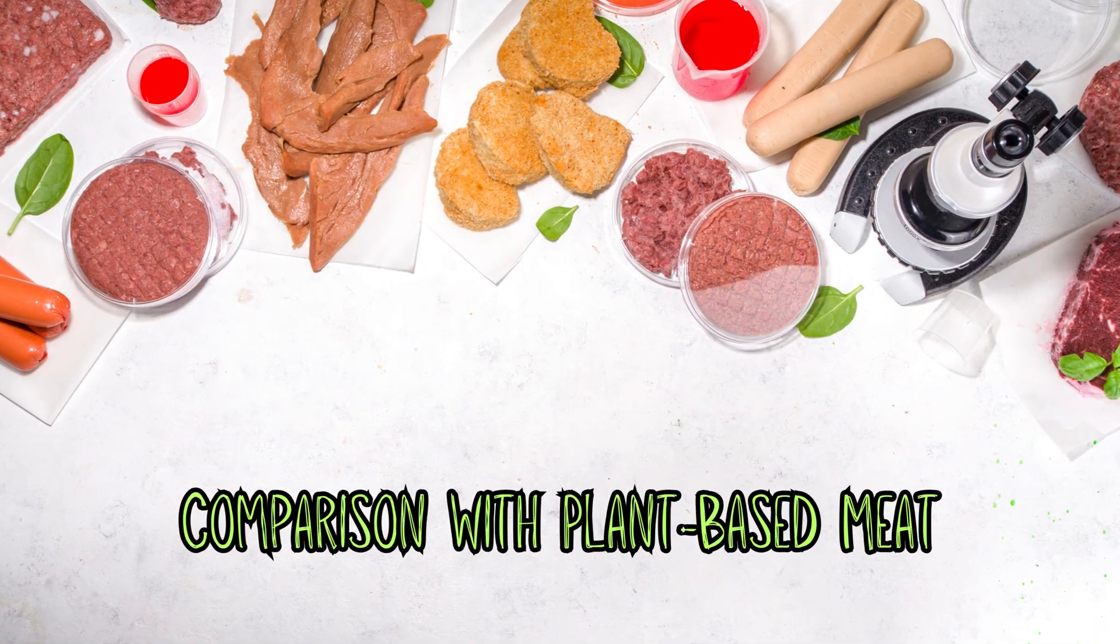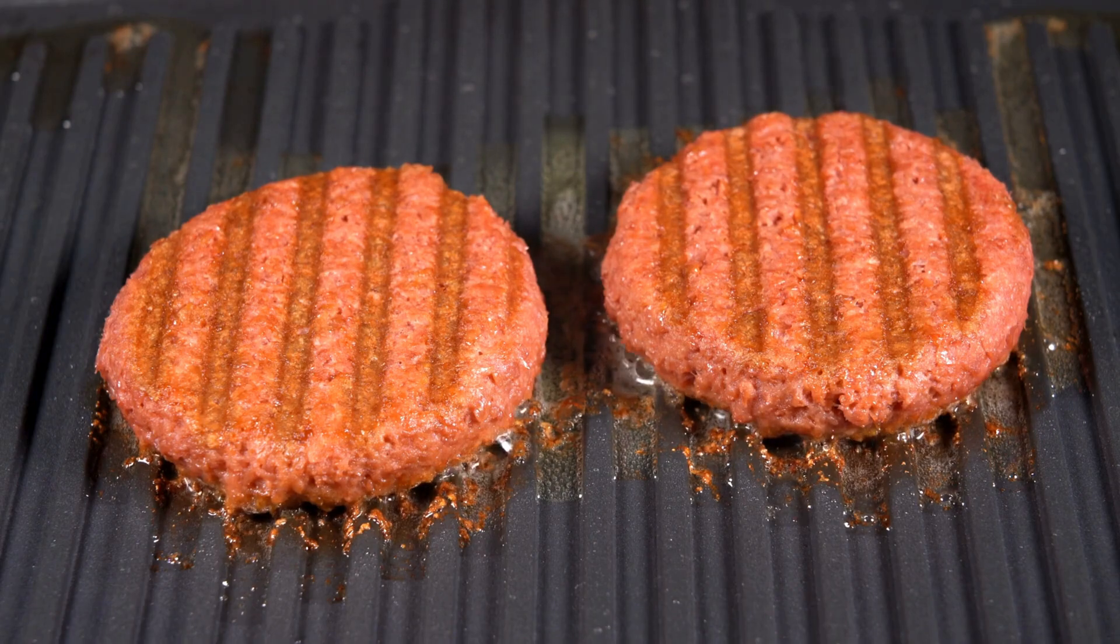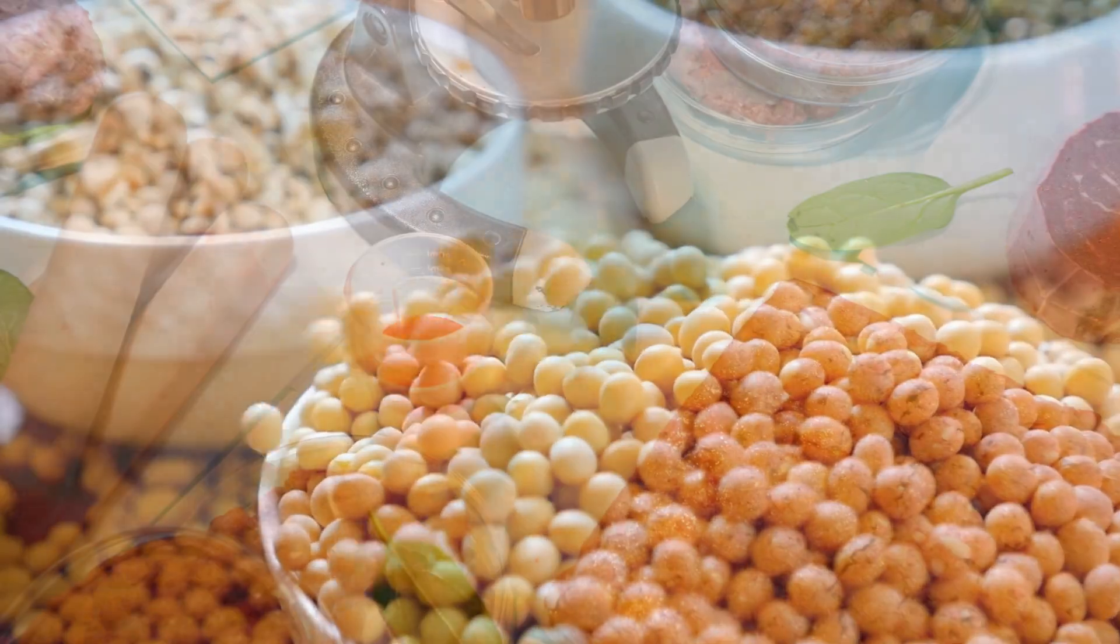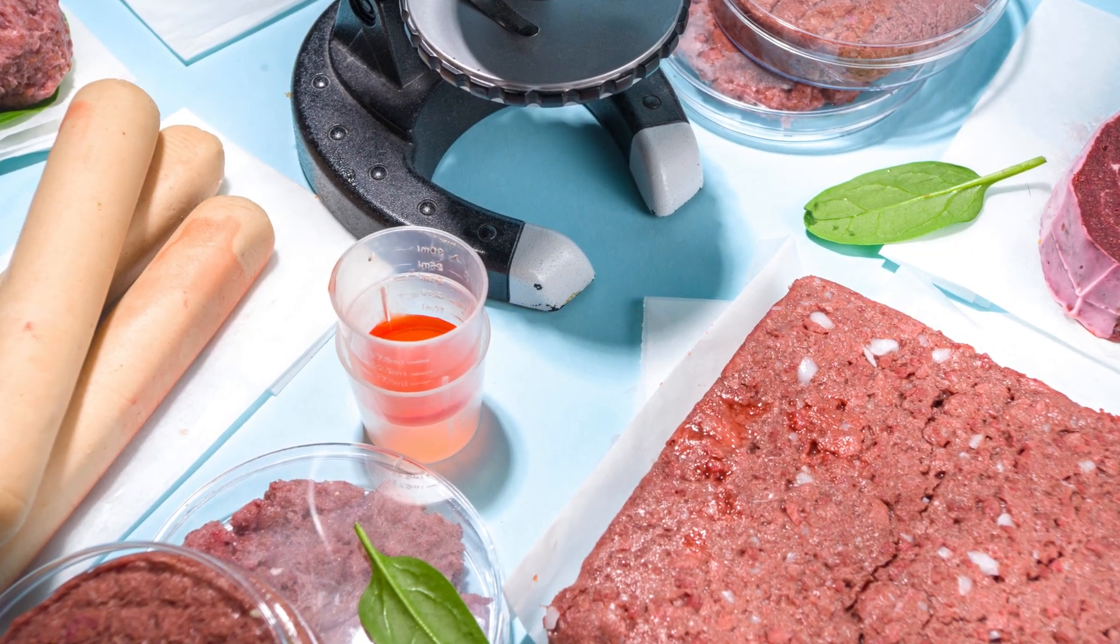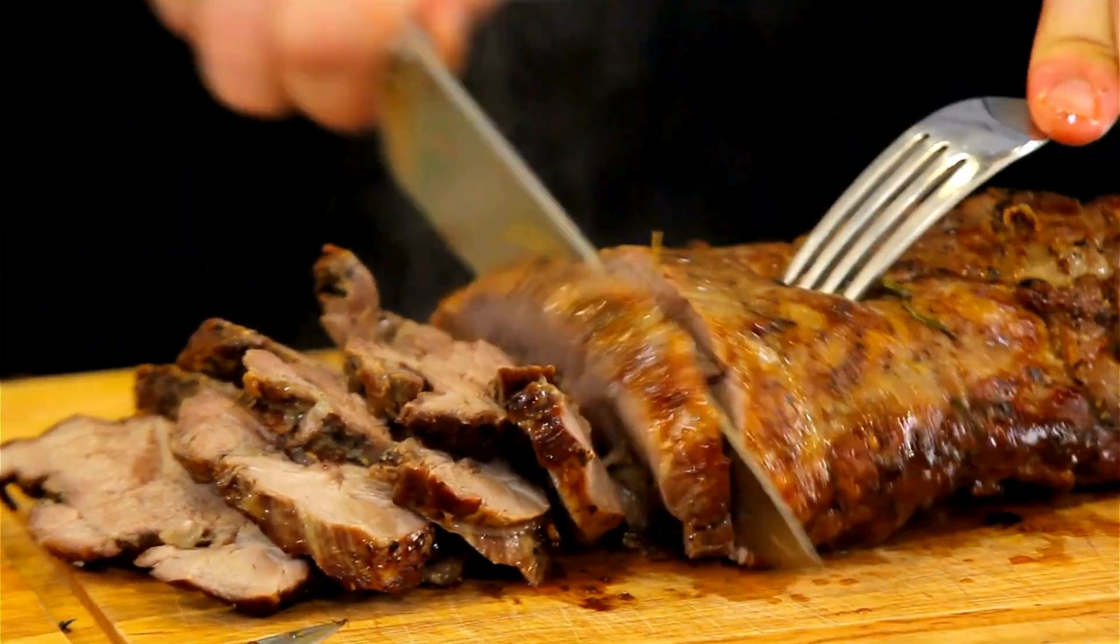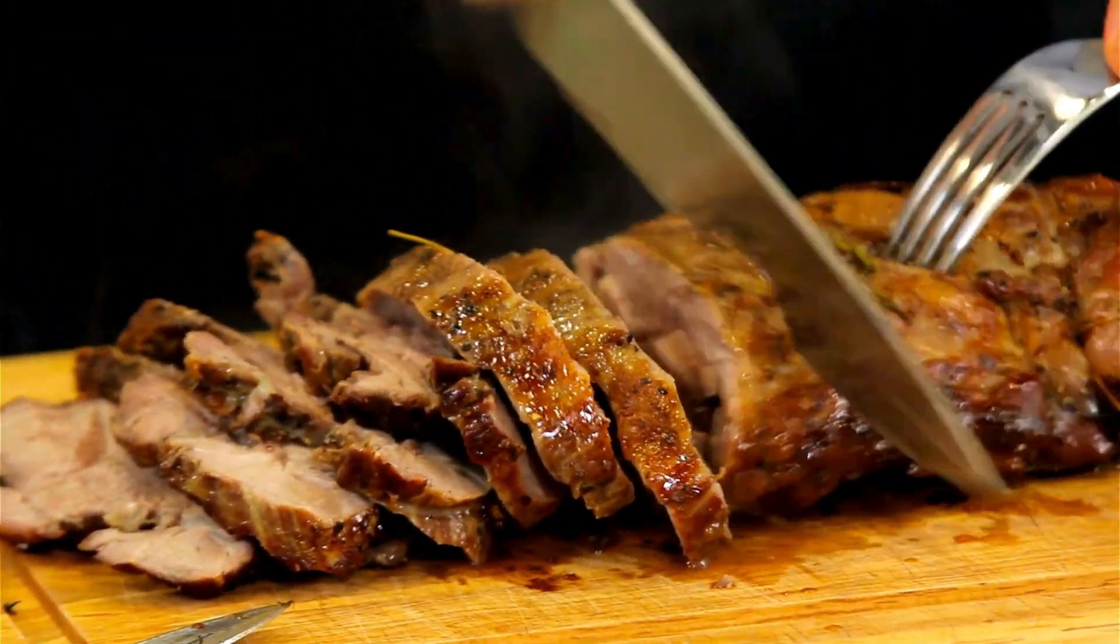Comparison with plant-based meat. While plant-based meats mimic the taste and texture of meat using ingredients like soy and pea protein, lab-grown meat is actual animal tissue cultivated outside the animal. This distinction gives lab-grown meat a closer resemblance to traditional meat in taste and texture, making it a promising option for meat enthusiasts.